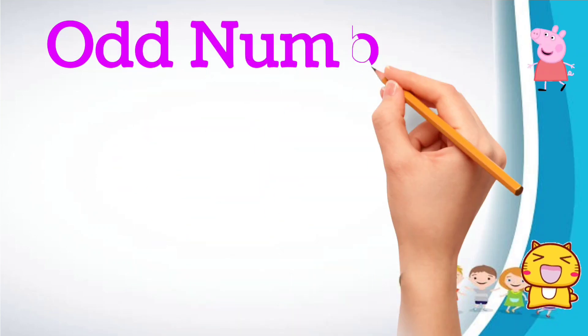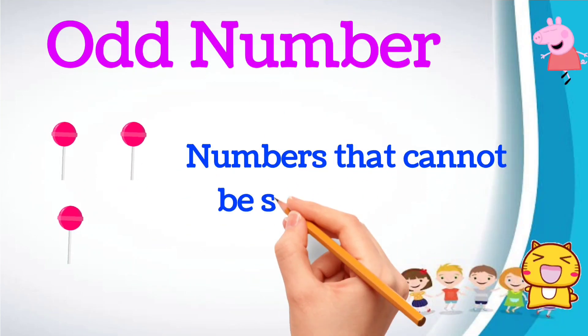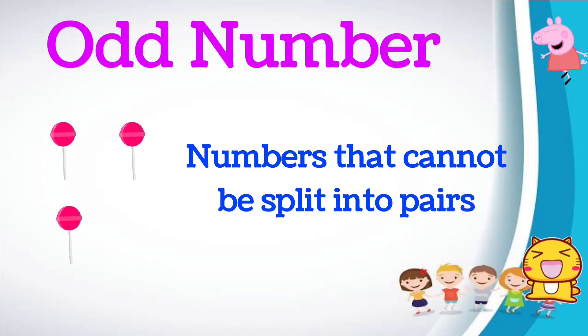What are odd numbers? Numbers that cannot be paired equally. There is always one that is left alone. One is odd number.